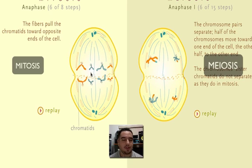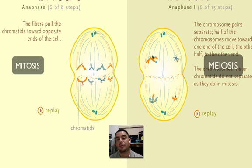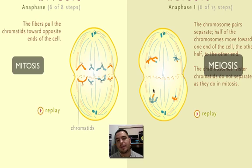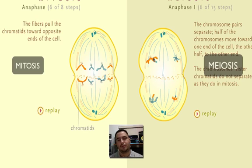Next is anaphase. In regular mitosis the chromatids are going to separate, whereas in meiosis one they don't separate — the only thing separating are the homologous chromosome pairs themselves, so there's no breaking of chromatids like in mitosis. This is a crucial step called the law of segregation in meiosis because it turns the number from diploid to haploid — you go from four chromosomes to two, cutting the chromosome number by half.